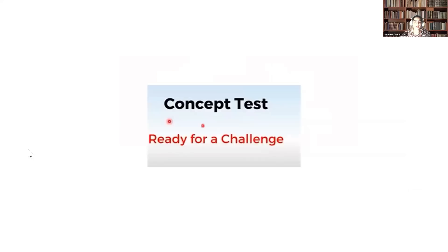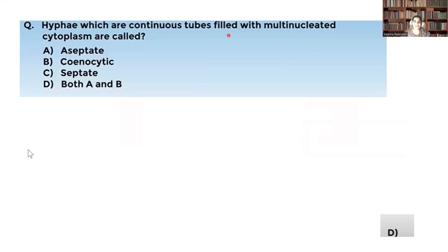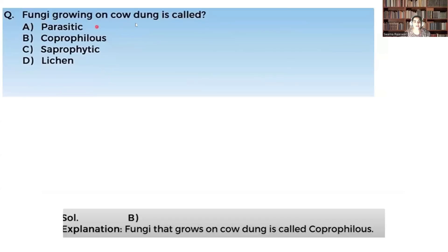Concept test: Hyphae which are continuous tubes filled with multi-nucleated cytoplasm are called — (A) aseptate, (B) coenocytic, (C) septate, or (D) both A and B. The answer is D — both A and B are correct, since hyphae without septa are aseptate and the condition of containing several nuclei is called coenocytic. The next question: fungi growing on cow dung is called coprophilous.